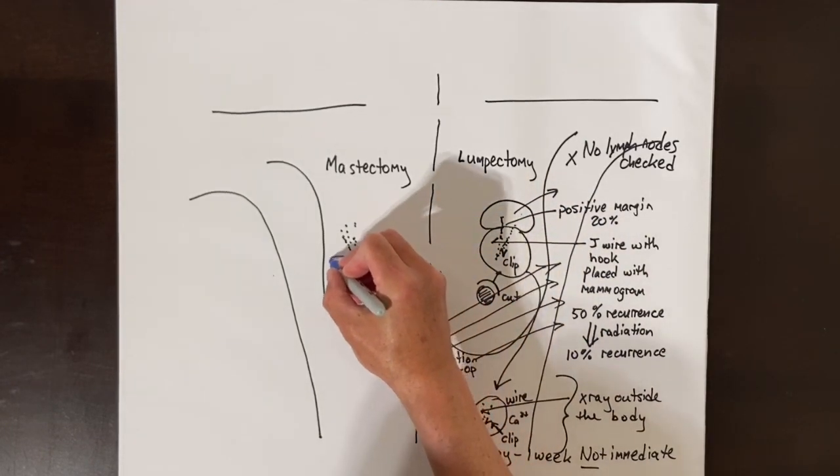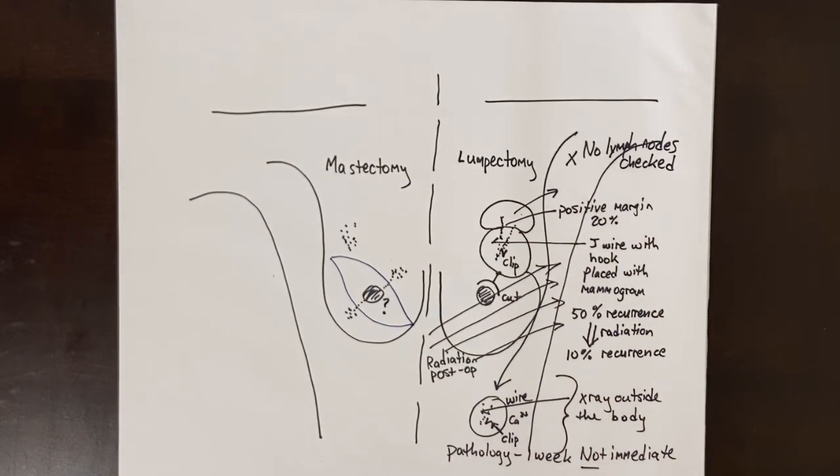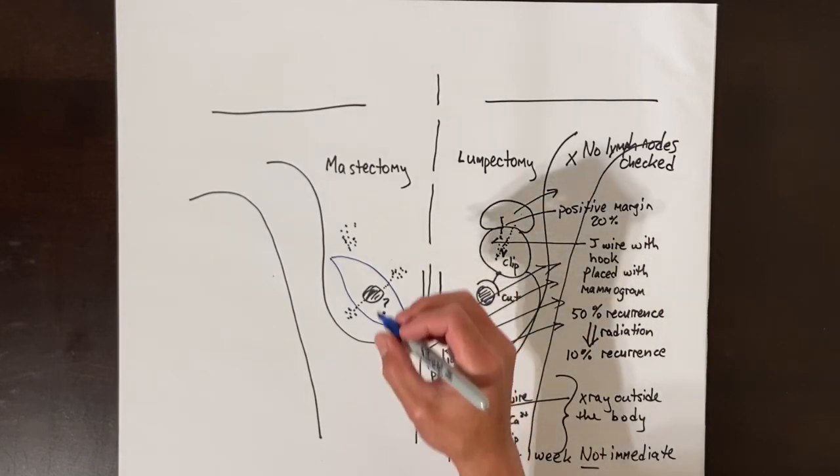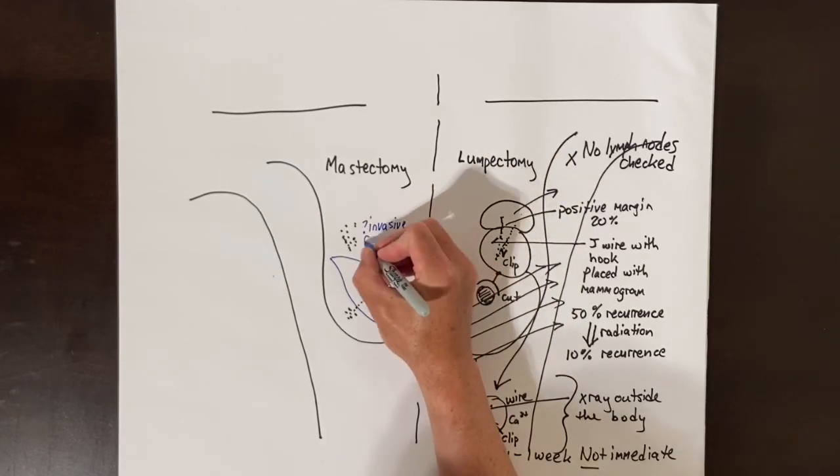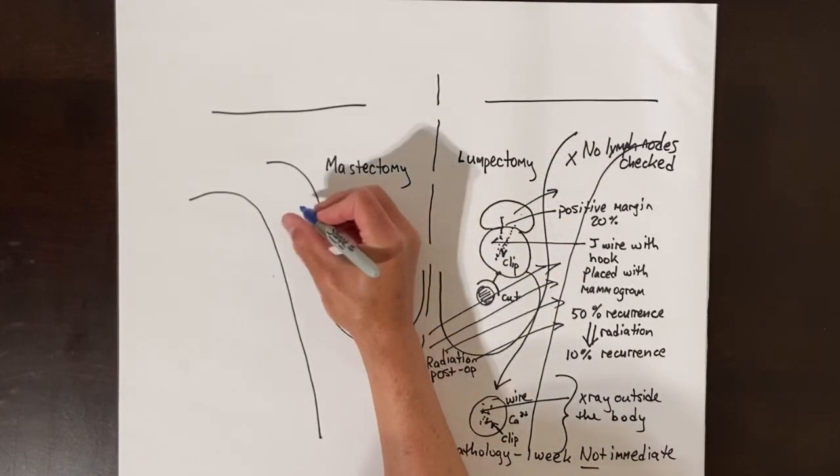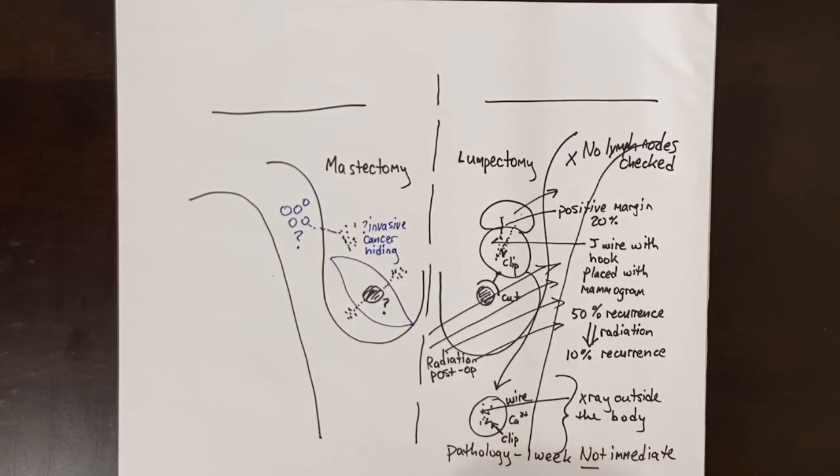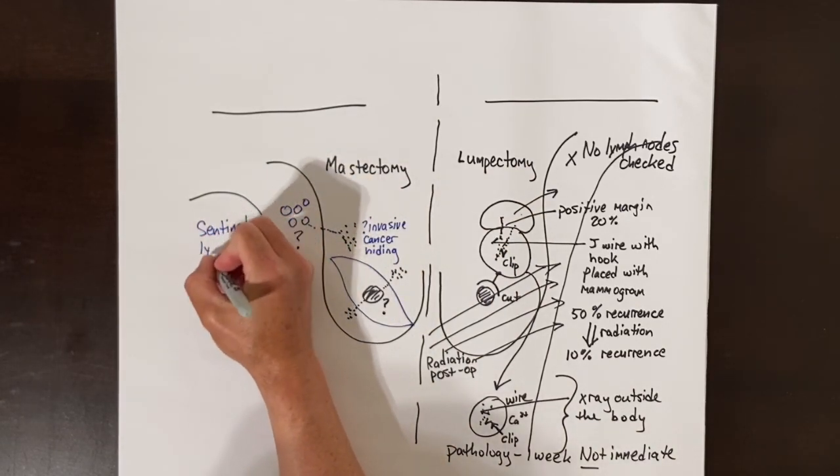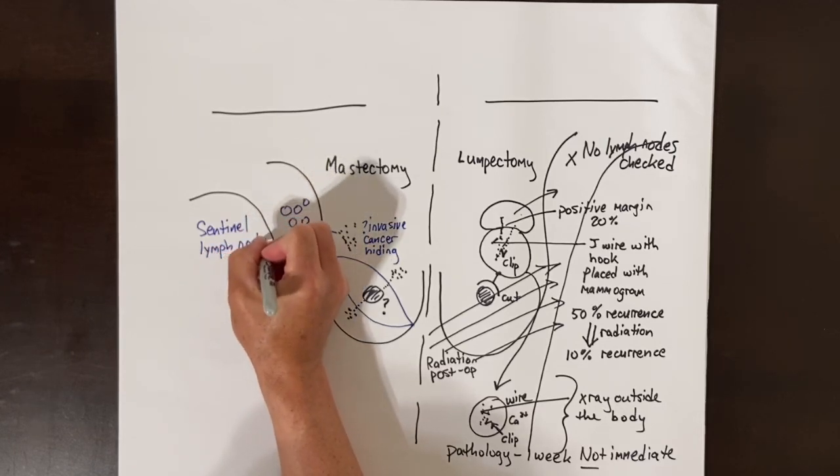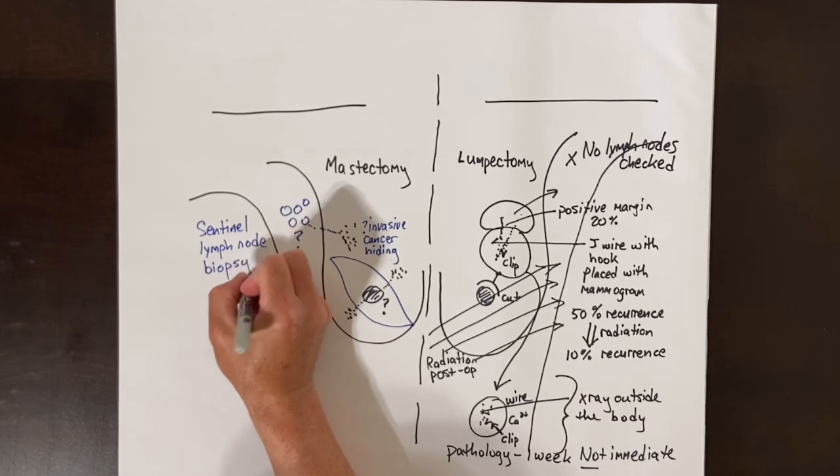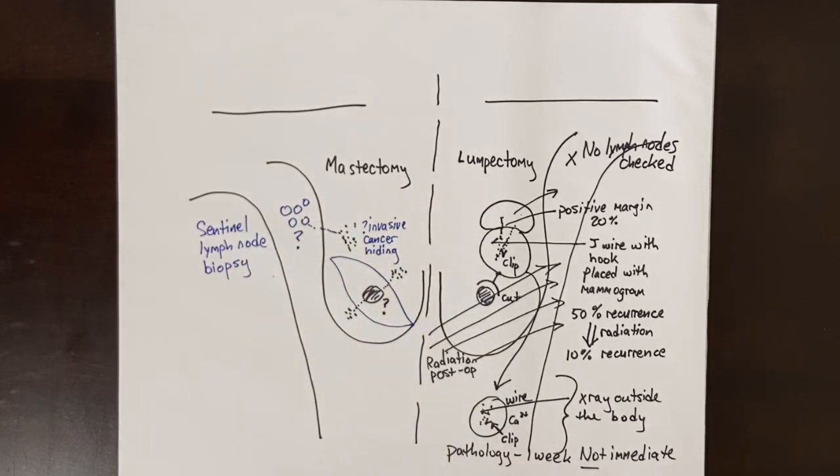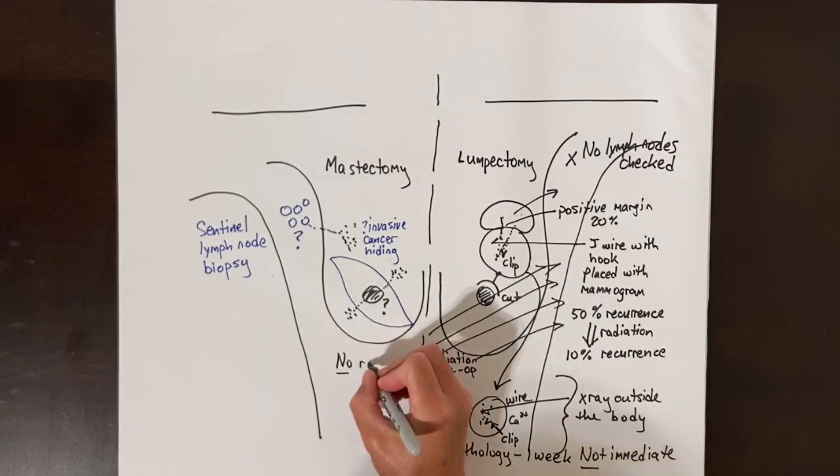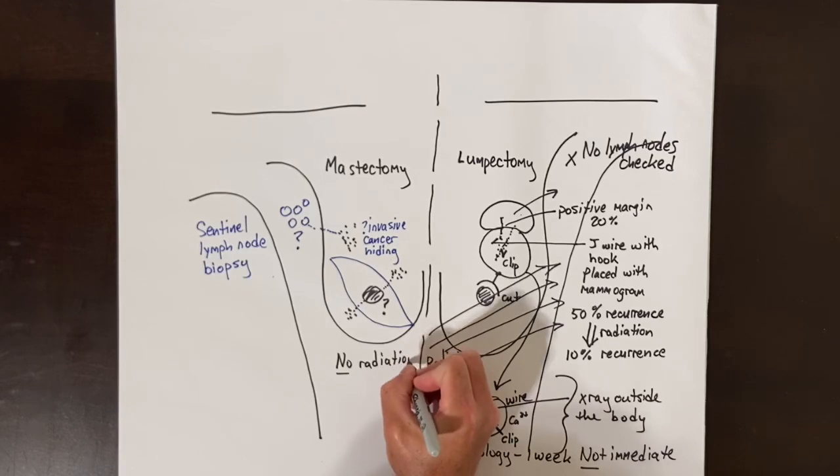Although, even though I said DCIS cannot get into the lymph nodes, sometimes when we remove the entire DCIS area, we find that a part has invasive breast cancer that the needle biopsy missed. So, if we are doing a mastectomy, that is our one chance to check the lymph nodes for cancer via the sentinel lymph node biopsy technique, explained in a different video. It is probably a good idea to do the lymph node check during the mastectomy for DCIS on the small chance you find invasive cancer in the breast after you take it out. Now, because there is no breast tissue left after a mastectomy, there is no reason to give radiation. So, a mastectomy does prevent the need for radiation with DCIS of the breast.